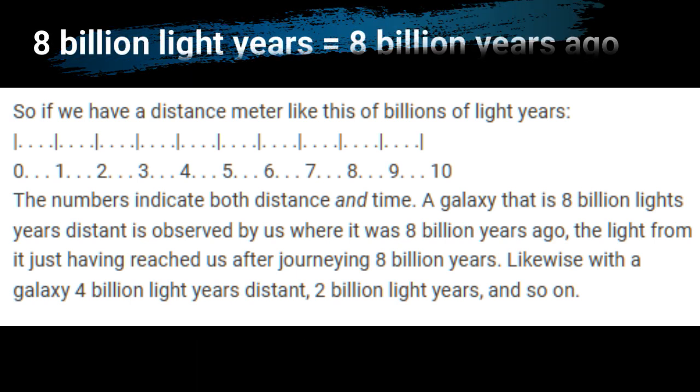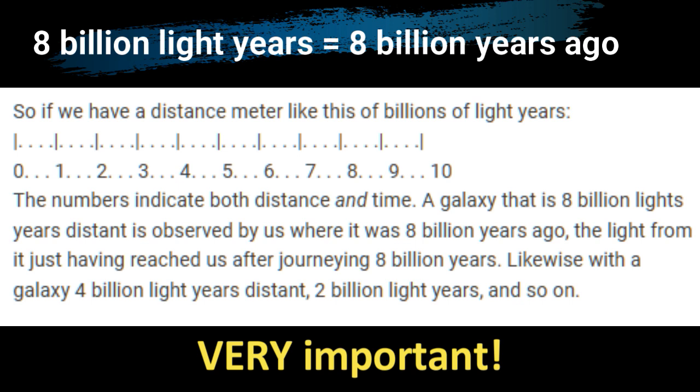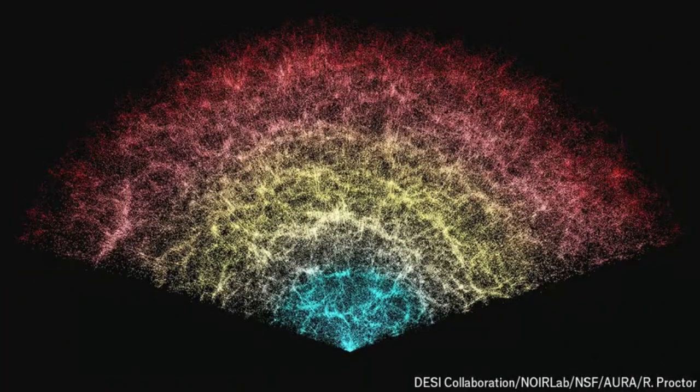A galaxy that is eight billion light years distance is observed by us as it was where it was eight billion years ago, the light from it just having reached us after journeying eight billion years. The observations of galaxies show that when we plot every observed galaxy by its distance from us, we get an even distribution. The galaxies are spread not more thinly, but uniformly.